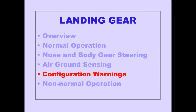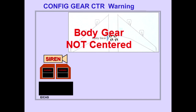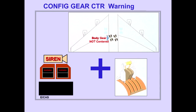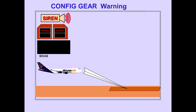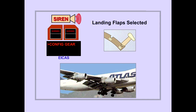Let's now discuss the landing gear configuration warnings for takeoff and landing. The ICAS warning message Configuration Gear Center is displayed when either body gear is not centered and thrust lever two or three is advanced for takeoff, or on approach below 800 feet radio altitude. The ICAS warning message Configuration Gear is displayed with any throttle at idle and any landing gear not down and locked. The ICAS warning message Configuration Gear is also displayed when landing flaps are selected and any landing gear is not down and locked.